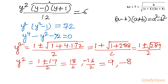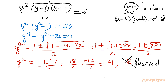Since y² equals minus 8 is negative, that would give complex solutions. For real valued solutions, y² cannot be negative, so we reject y² equals minus 8. Therefore y² equals 9, giving y equals plus or minus 3.